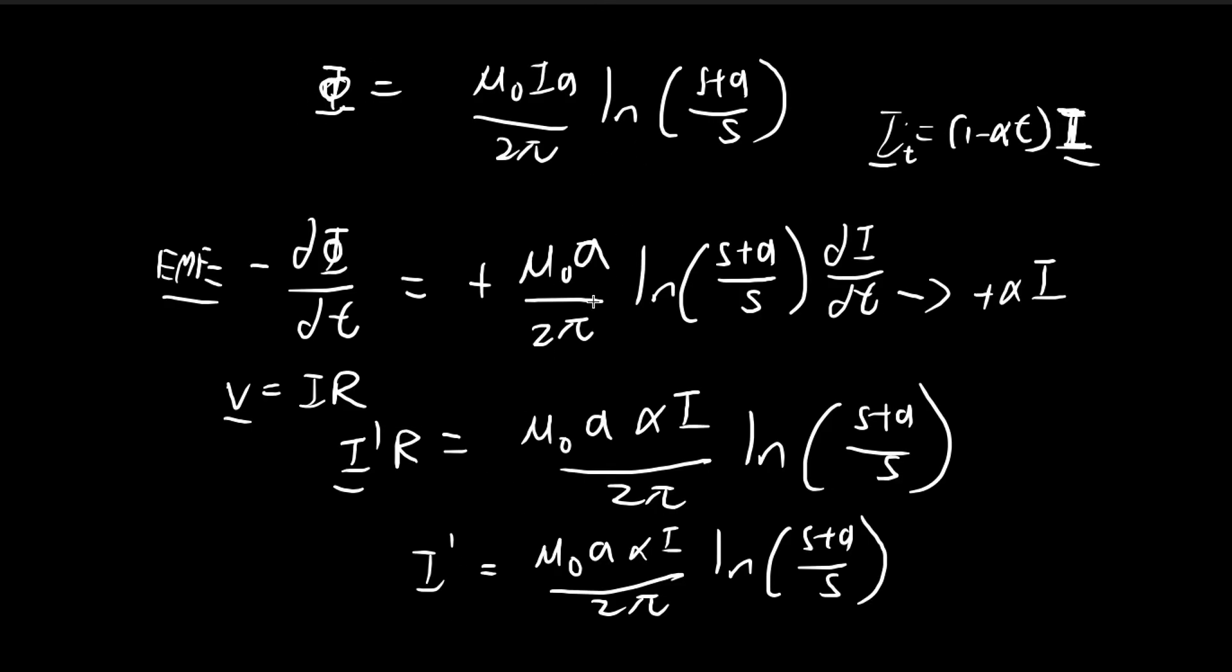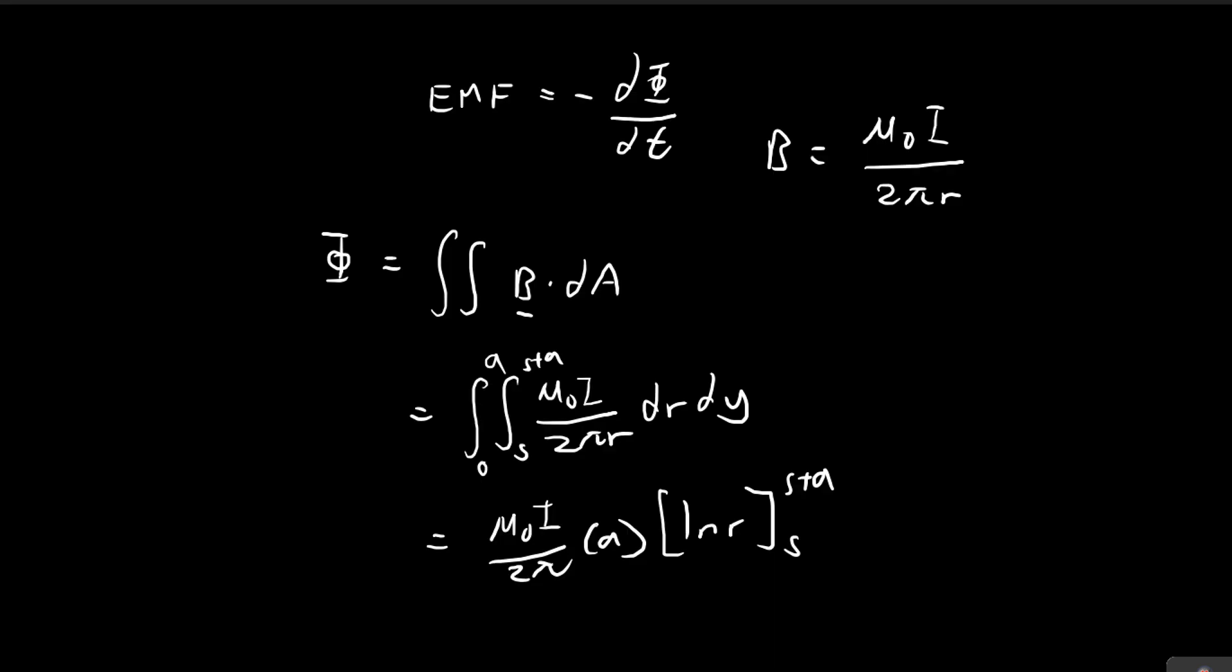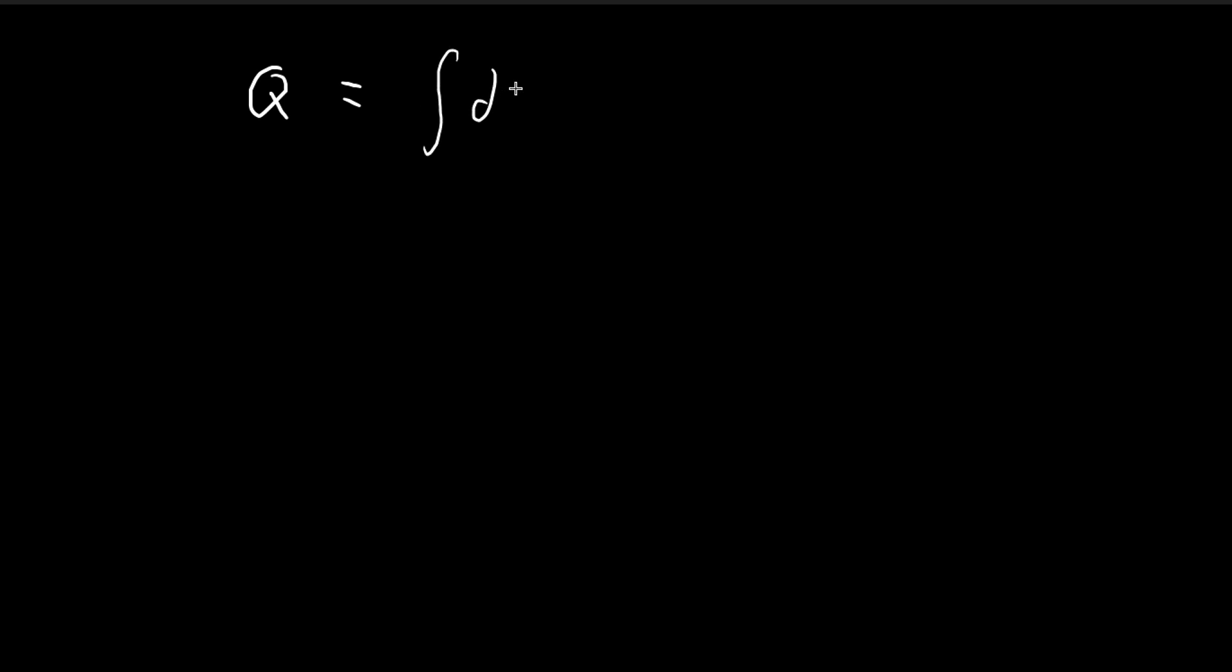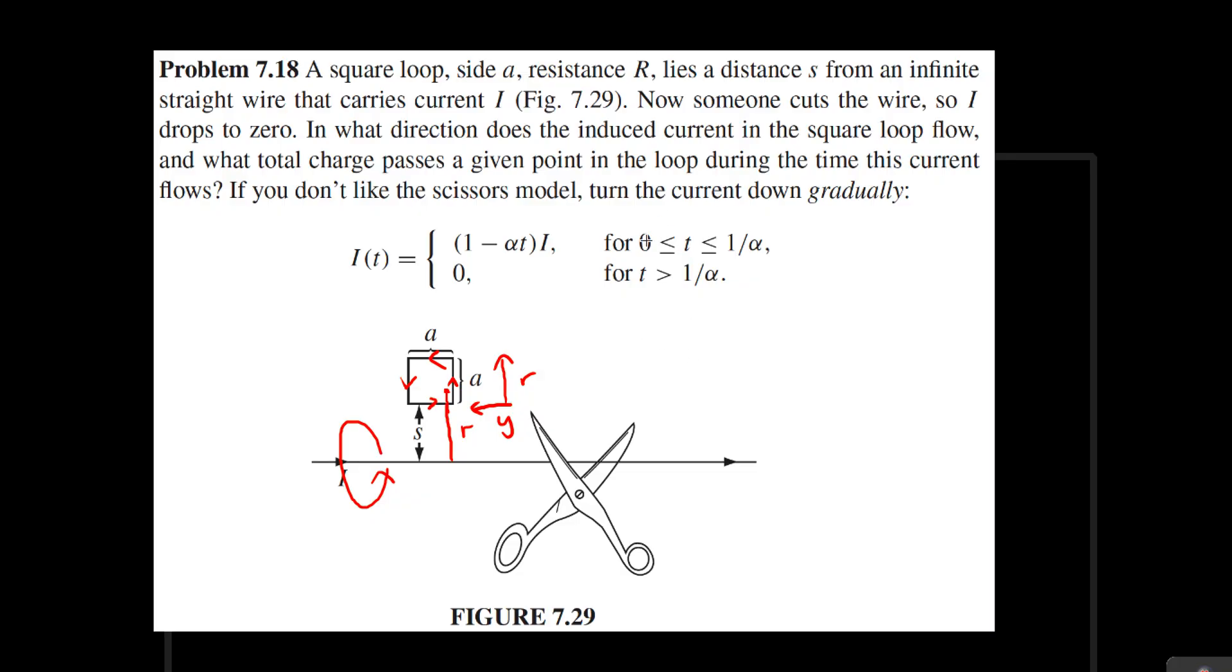And now going back to the original problem, we need to find the total amount of charge that is running through the wire after the current drops from its initial value down to 0. And we do that by integrating I times dt. Because I is just the change in charge divided by dq/dt. So if we take I multiplied by dt, that's the instantaneous amount of charge that passes through. And then we integrate it. We will get the total amount of charge that passes through a given point for the length of time that we are integrating across. And the length of time that we are going to integrate across is going to be 0 to 1/α.